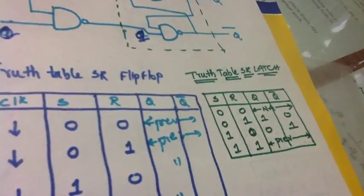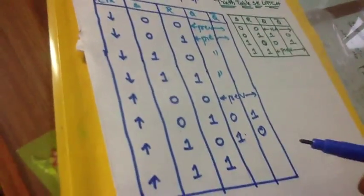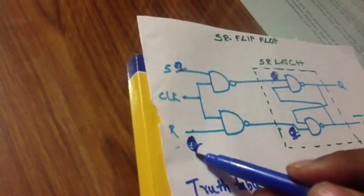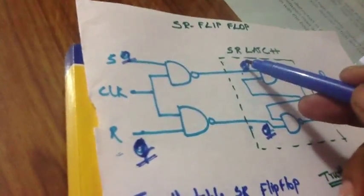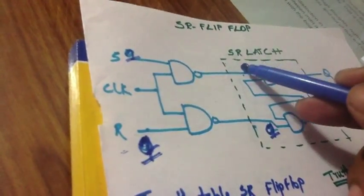Now 1 and 1. When S is equal to 1, R is equal to 1, the input for the SR latch will be 0 and 0. 0 and 0 for SR latch is not accessible, and hence this state is not accessible.